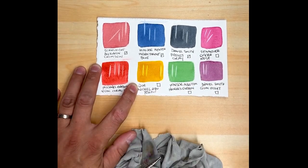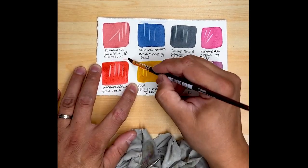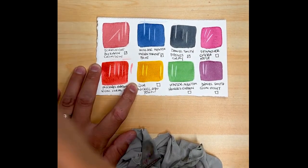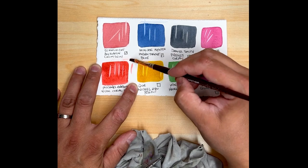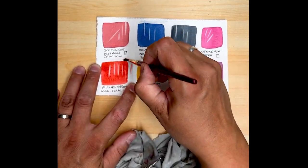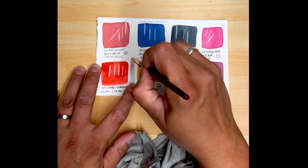If you happen to dribble a little bit, if you pick up the paint, you can paint with it. But if you happen to dribble a little bit, you can try this first, depending on how staining the paint is, before you use a magic eraser.